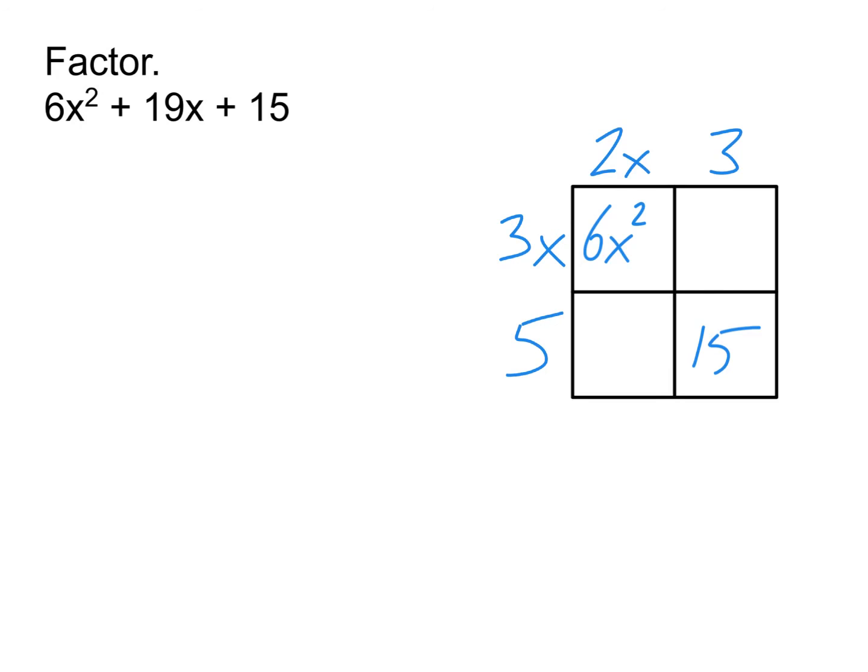And remember, this is just that guess and check process. And so then I'm going to see what do I get in each of the corners and see if that gives me what I've been looking for. All right, so 3x times 3 gives me 9x, 2x times 5 gives me 10x, and then I add them up, that gives me 19x. Okay, which is what I'm looking for.